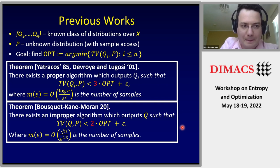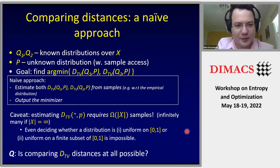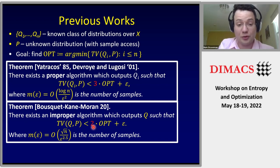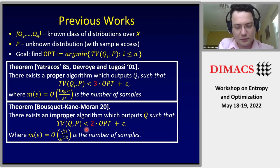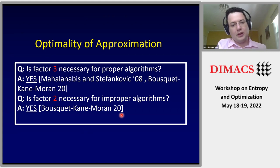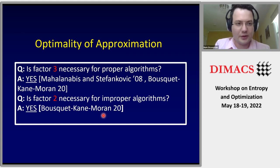A question was raised about how the lower bounds showing that 2 and 3 are optimal are proved. I won't go into that in detail as I don't remember it off the top of my head, but it roughly follows the same logic as why you can't estimate total variation distance. It's purely information-theoretic, at least for the factor 2. The lower bound even for improper algorithms is in that previous paper.